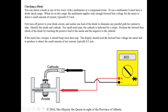Checking a diode — we can use a multimeter or component tester. Using a multimeter, you must have a diode check range. Set on this range, the meter applies enough forward bias voltage to direct a small current, typically 0.5 milliamps. Turn off power to the diode circuit. Isolate one lead of the diode to eliminate parallel paths. Identify the anode and cathode — for small axial types, the cathode is indicated by a stripe. For the forward bias check, touch the positive lead to the anode and negative to the cathode. If the meter has a beep, it should beep once and stop, displaying the forward bias voltage — typically around 0.7 volts.